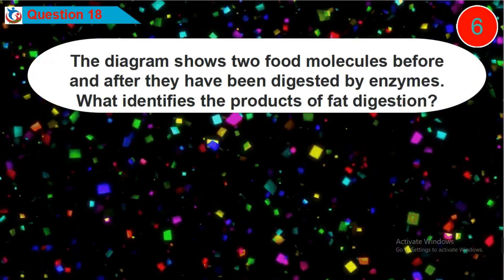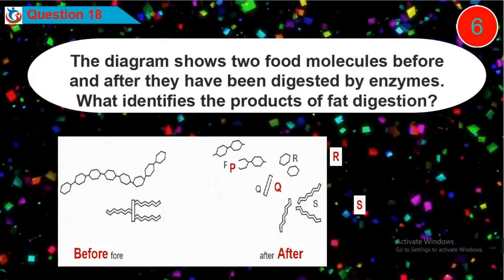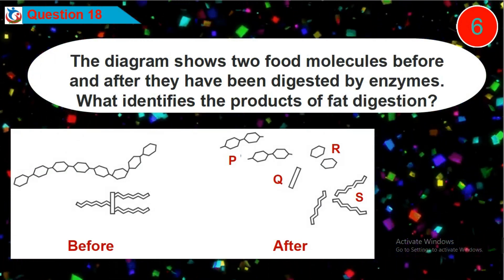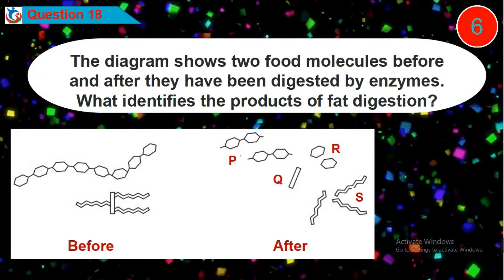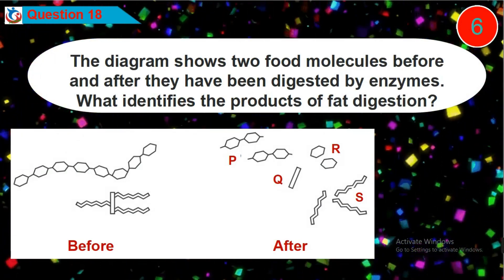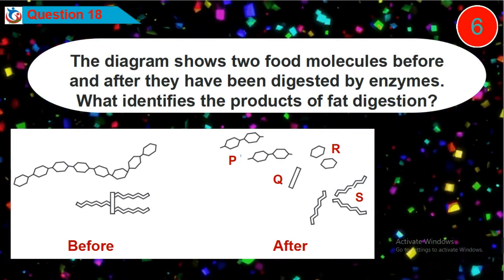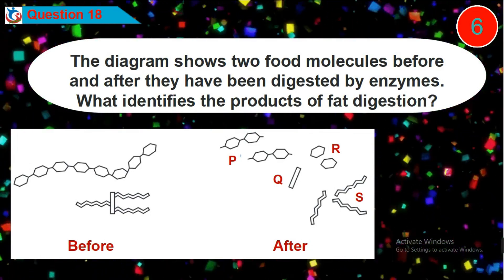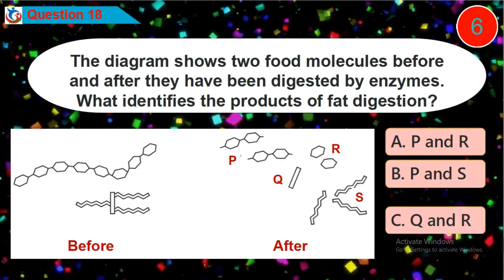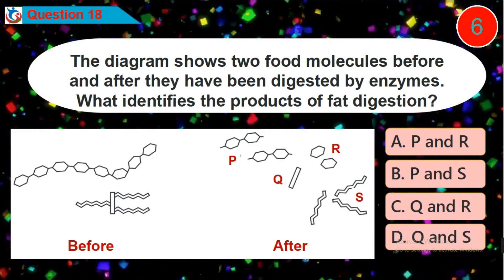Question 18: The diagram shows two food molecules before and after they have been digested by enzymes. What identifies the product of fat digestion? Is it option A, B, C, or D?